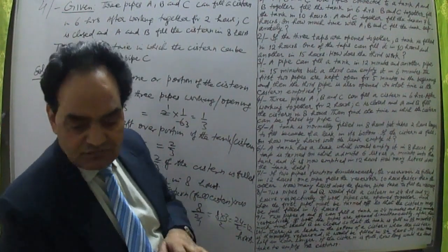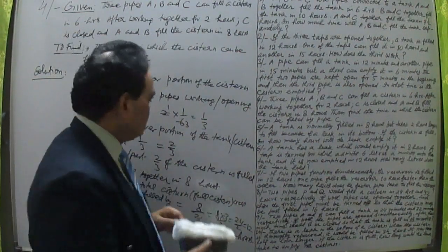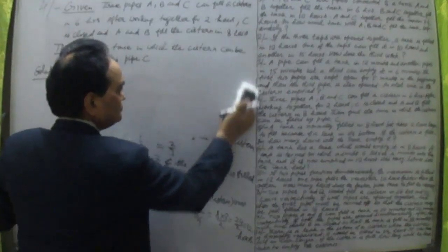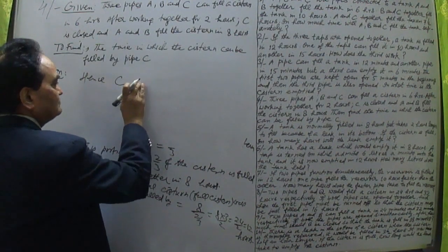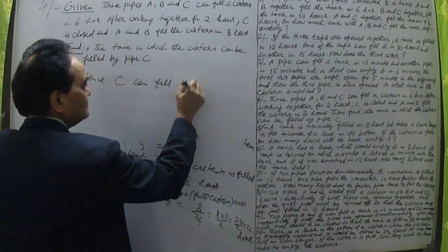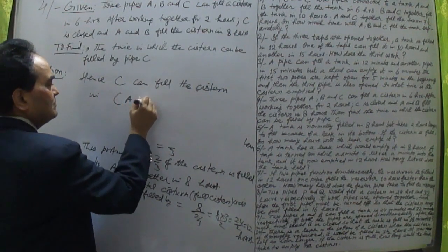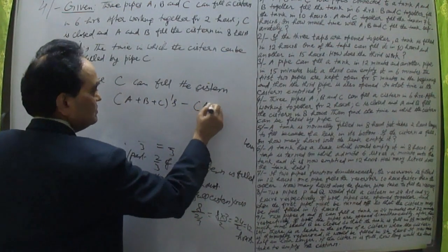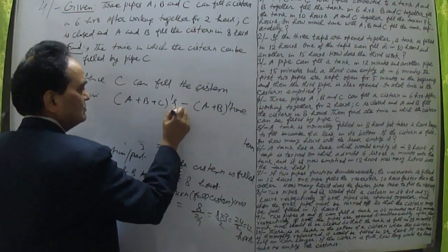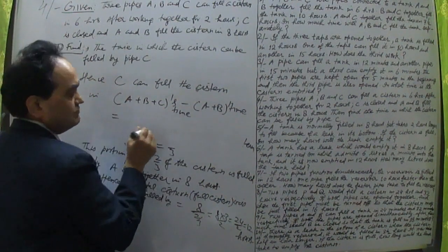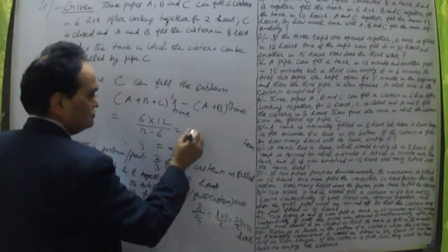Now A plus B together can fill the tank in 12 hours, and all three A, B and C together can fill it in six hours. We can now find how many hours C alone takes. The rate of C is the rate of (A+B+C) minus rate of (A+B), so C's time is 6 into 12 divided by 12 minus 6.